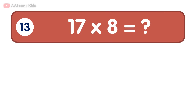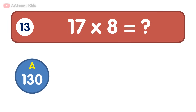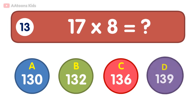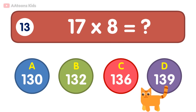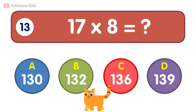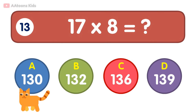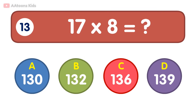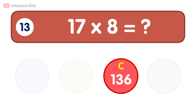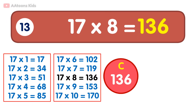17 times 8 is equal to 136. 17 times 8 is 136.